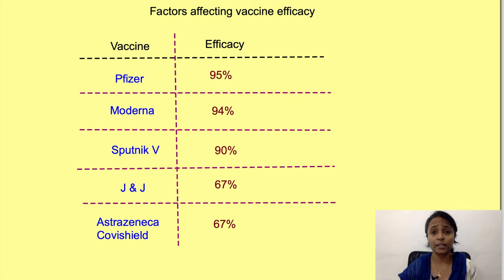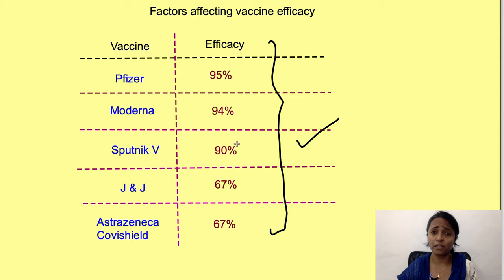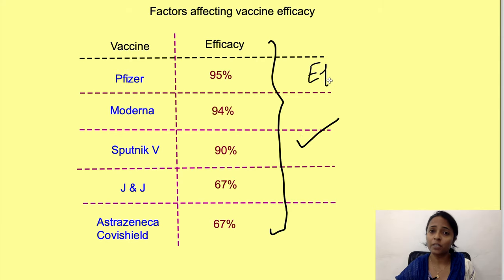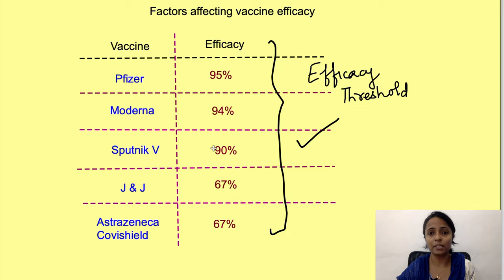There are so many COVID vaccines that have been approved. We know that these vaccines have different efficacy, as shown in this table. Now all these vaccines, despite having different efficacies, have been approved. This concept I have dealt with in another video known as efficacy threshold — the link is given in the description below. The subject of this video is to find out what are the factors which affect vaccine efficacy.